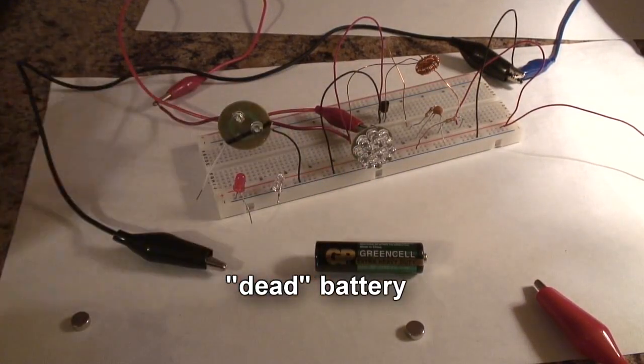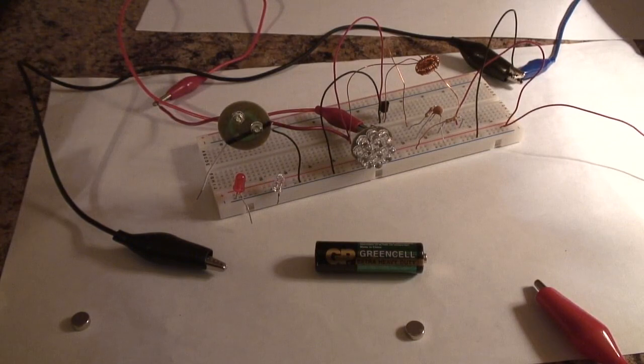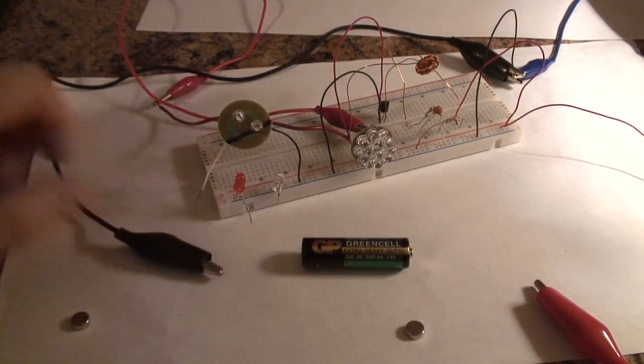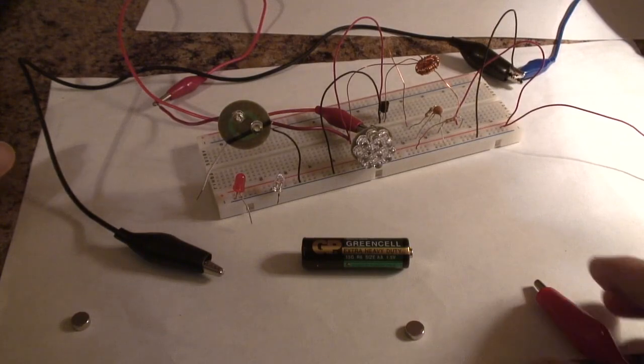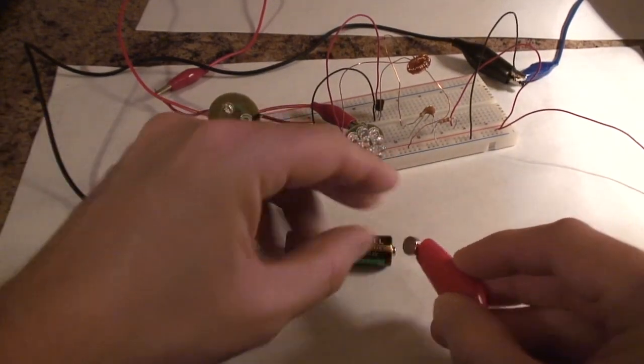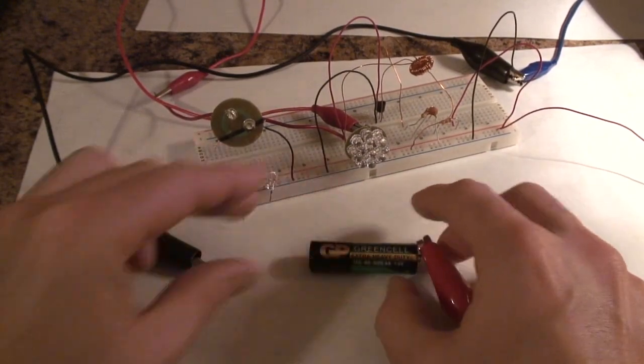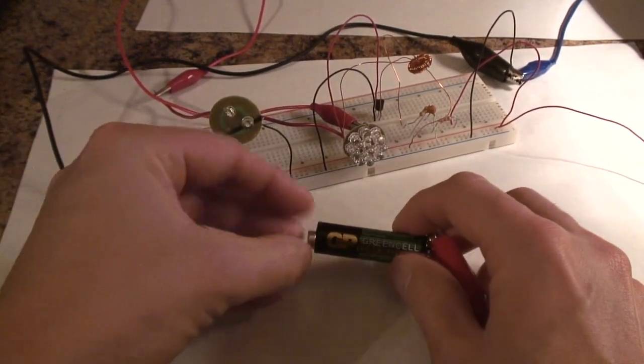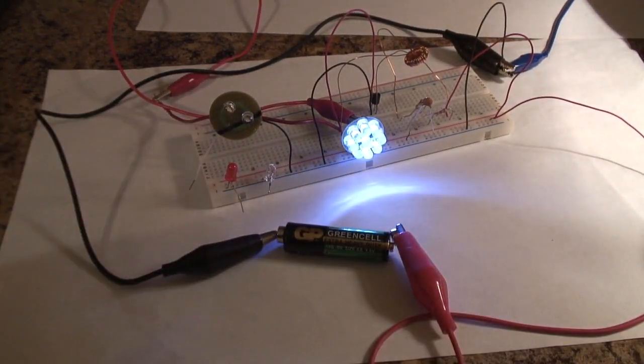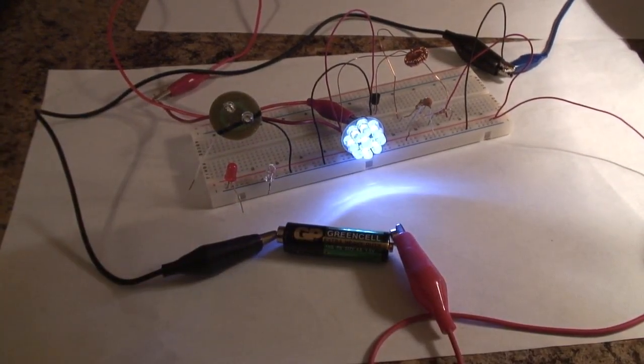Here is a dead battery. I put dead in quotes because it still does have some charge in it, but the voltage is too low for a normal device to do a normal application. And this battery came out of my junk drawer. But look at that, it's lighting up nine LEDs, no problem.